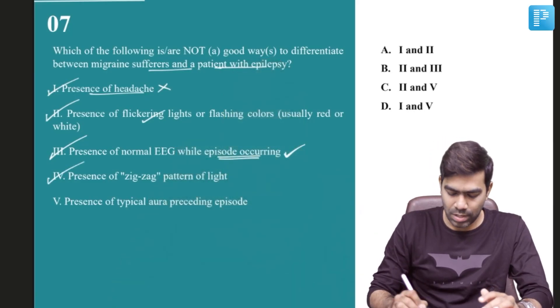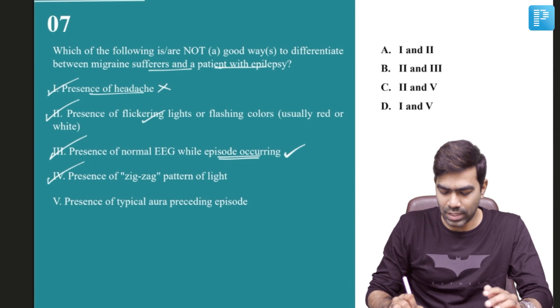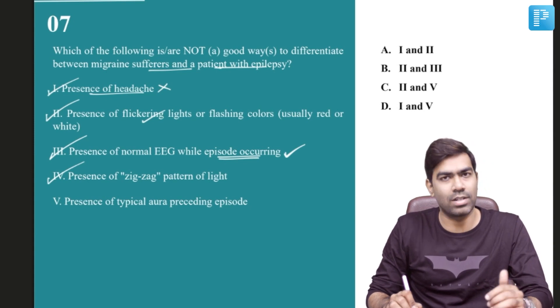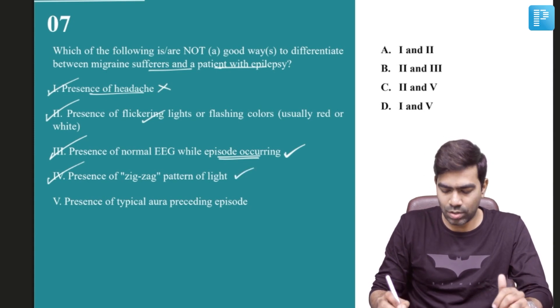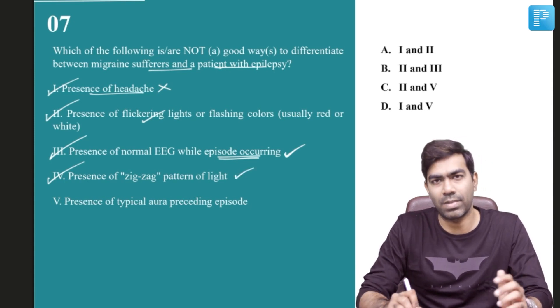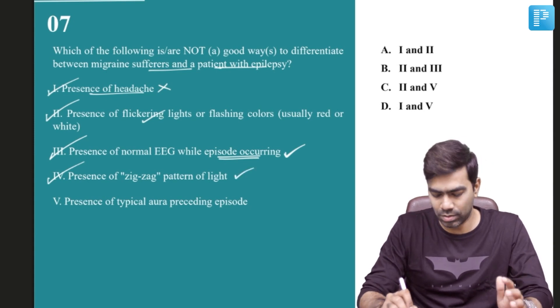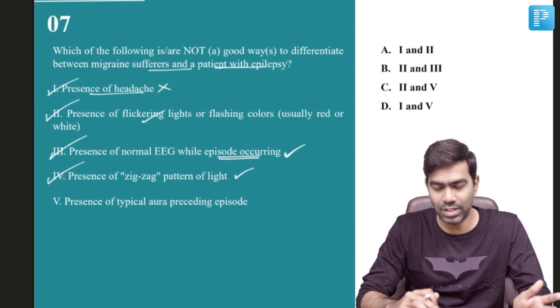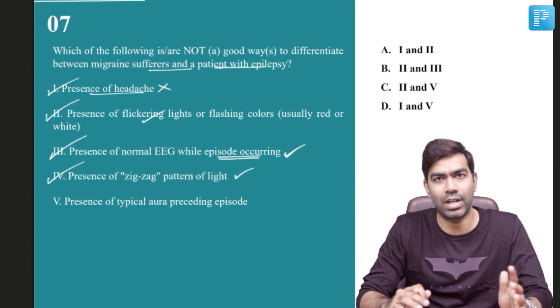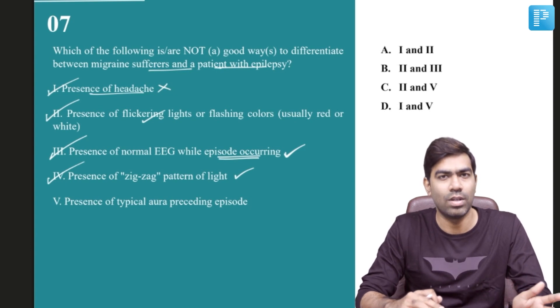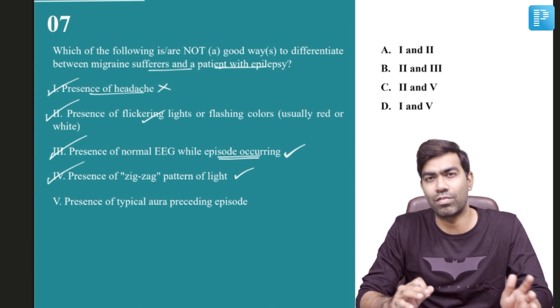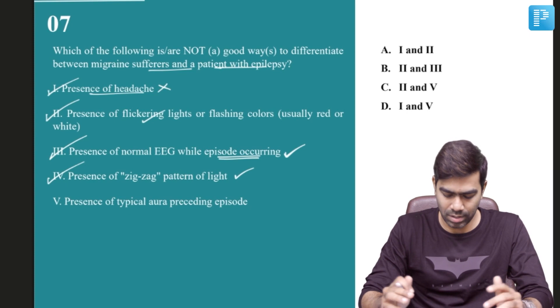Statement 4: presence of a zigzag pattern of light. This also can differentiate between migraine and epilepsy because this kind of zigzag pattern of light is going to go more in favor of migraine rather than epilepsy.